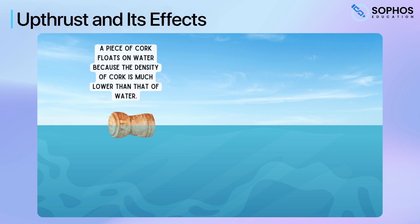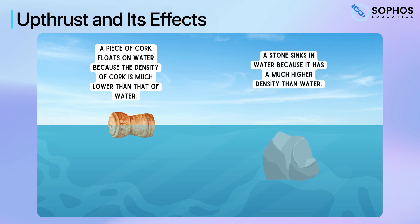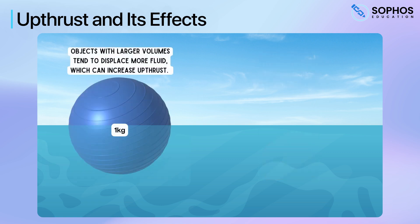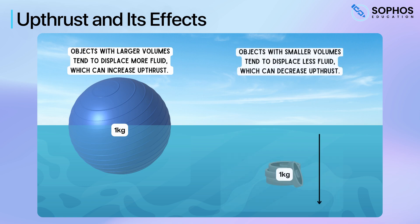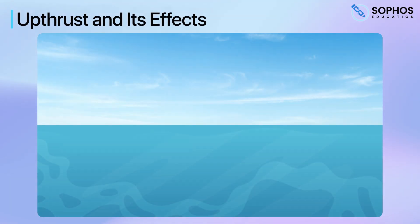For example, a piece of cork floats on water because the density of cork is much lower than that of water. Conversely, a stone sinks in water because its density is higher. Additionally, even if two objects have the same mass, their shape and volume can influence their buoyancy. Objects with larger volumes tend to displace more fluid, which can increase upthrust, whereas objects with smaller volumes tend to displace less fluid, which can decrease upthrust.